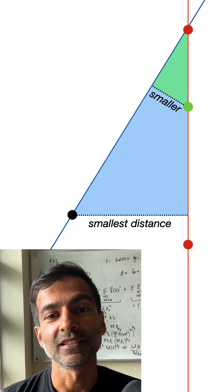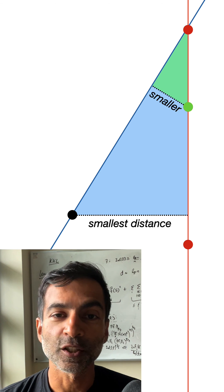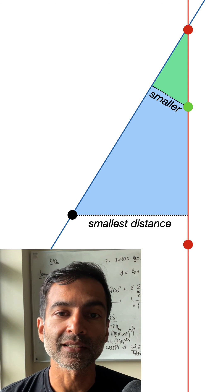And that contradicts the choice of the black point that we made in the first place. The only possibility is that all points lie on a single line.